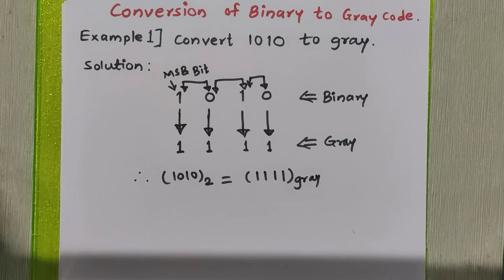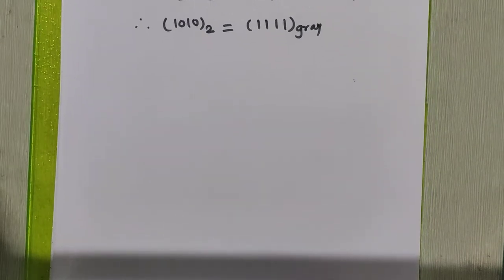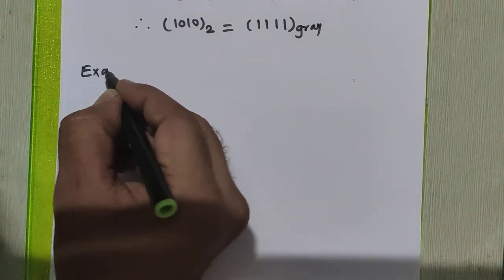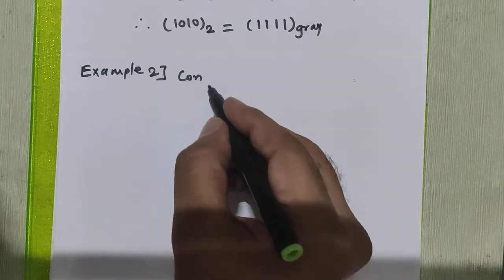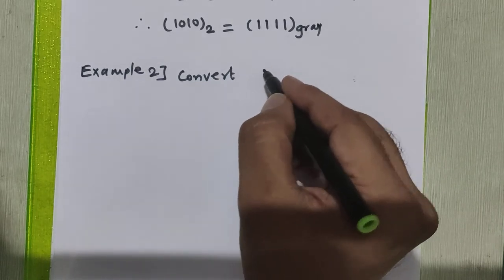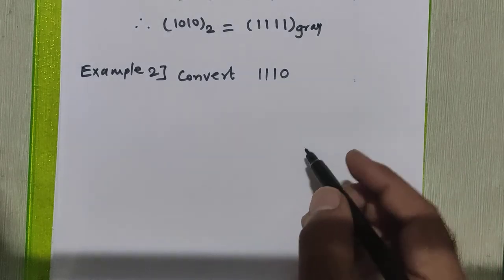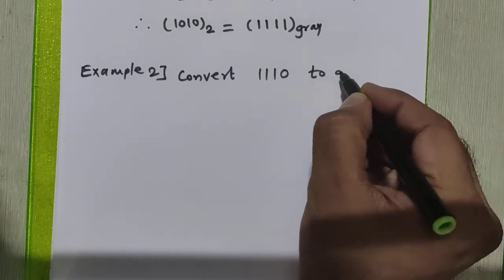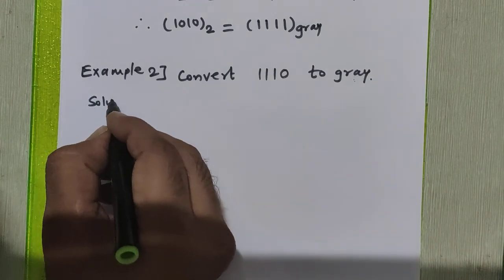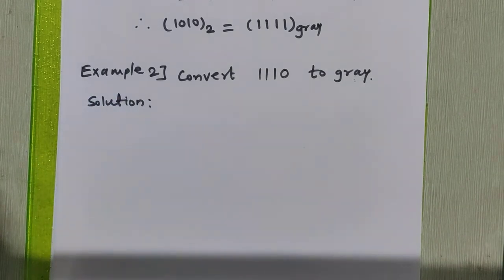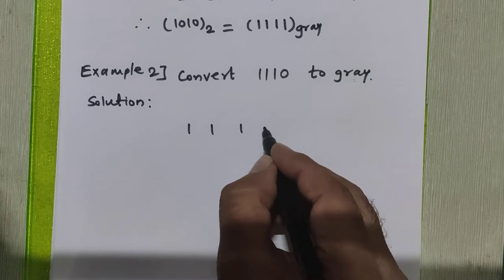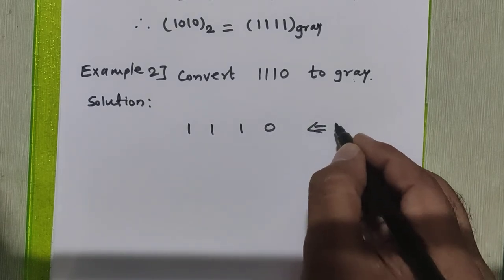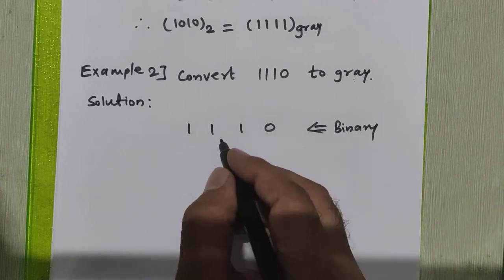To further understand binary to grey code conversion, we will see one more example. Here we are going to convert 1110 binary to grey. We will write the given binary number as it is here — this is our given binary number 1110.